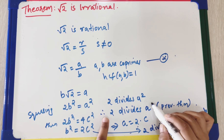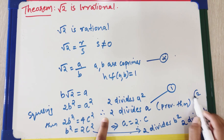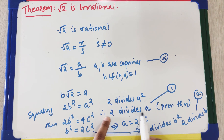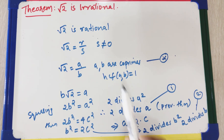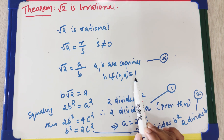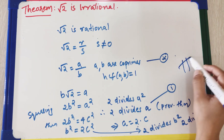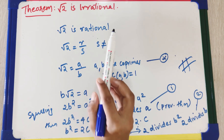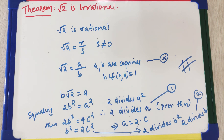So we have shown that 2 divides both a and b, meaning 2 is a common factor of a and b. But we chose a and b to be co-primes, so their only common factor is 1. This is a contradiction. The contradiction arose from our false assumption, and therefore √2 is irrational.